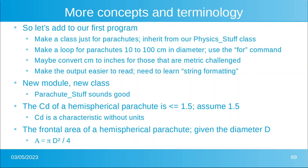Let's make a new module and a new class. I'm sticking as creatively with the other names, so let's make this one called Parachute_Stuff. The coefficient of drag of a hemispherical parachute, you know a half circle, is less than or equal to 1.5. Let's assume 1.5.